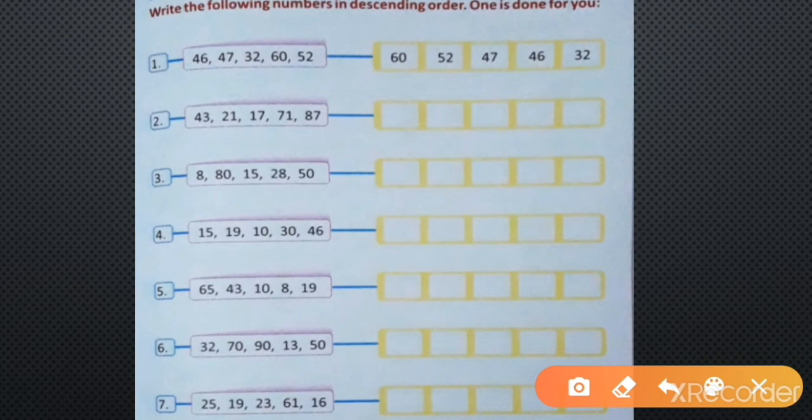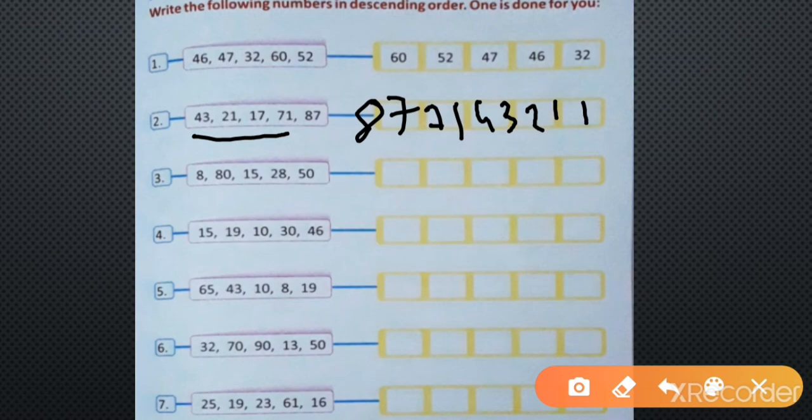So numbers are 43, 21, 17, 71, and 87. So which one is biggest? 87. So now the remaining numbers are, which one is biggest among these remaining numbers? 71, then 43, then 21, and 17 in the last box. Okay, in this way.